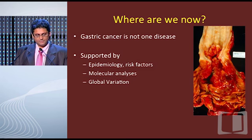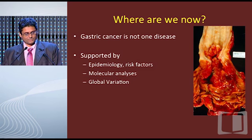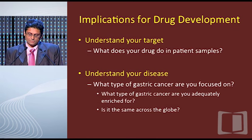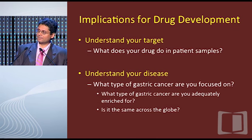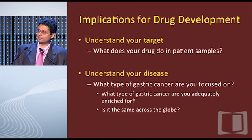Adding global heterogeneity to our diagram, the disease might be different across the globe — and this has significant implications for drug development. Gastric cancer is not one disease, as supported by epidemiology, risk factors, molecular analysis, and global variation. It is very important that we understand our target: a C-MET inhibitor is probably more likely to be beneficial in patients who are C-MET overexpressed. Whether C-MET overexpression is more prevalent in type 1 proximal non-diffuse or in diffuse gastric cancer are things we don't yet know but need to find out. We must understand the disease, what type we are focused on, and whether our population is adequately enriched — because the disease is not the same across the globe.